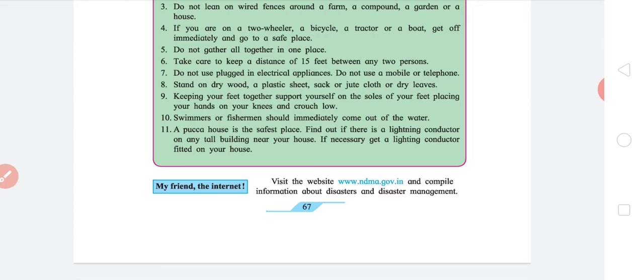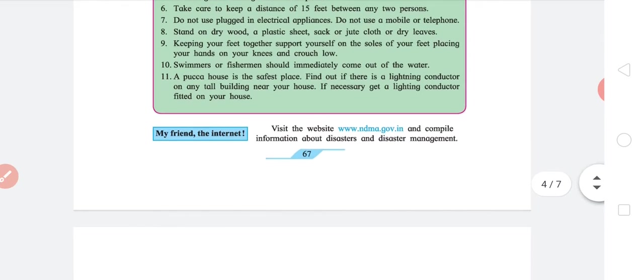Eighth, stand on dry wood, plastic sheet, sack, or jute cloth, or dry leaves, basically any electric insulator. Keep your feet together, support yourself on the soles of your feet, placing your hands on knees and crouch low. This is a position that has been proven to reduce the impact of lightning on the person. Tenth, swimmers or fishermen should come out of the water. Water and lightning, these two don't go together. It's a really bad idea to be in water when there is a lightning strike because water conducts electricity. Eleventh, a pucca house is the safest place. Find out if there's a lightning conductor on any tall building near your house. If it is there, you should go there if feasible.